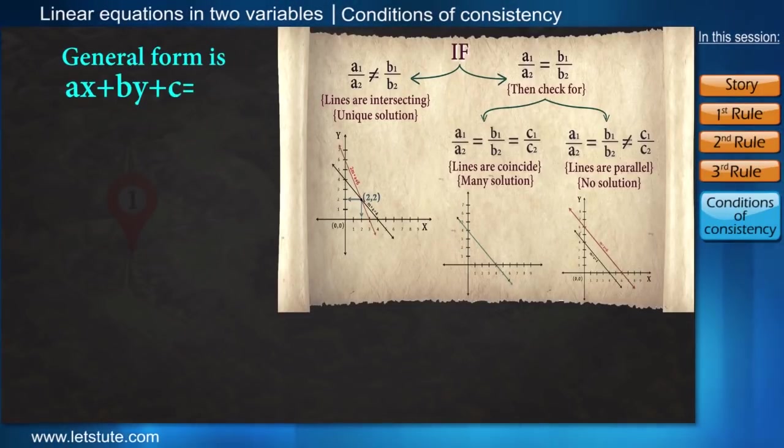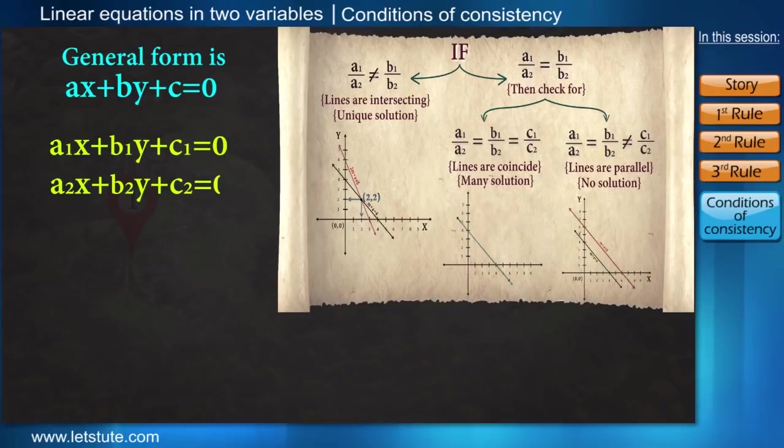This chart explains that the general form of a linear equation in two variables is ax plus by plus c equal to 0. So for two linear equations, we can write it as a1x plus b1y plus c1 equal to 0 and a2x plus b2y plus c2 equal to 0.